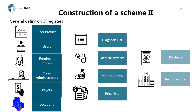What I covered in the last session was user profiles, users, enrollment officers, claims administrators, and locations. Now I'll cover the remaining points: payers — a relatively small thing — this is just a third-party payer, if you have any in an insurance program, which might pay on behalf of a particular group or household. That's just the configuration of that entity so you can indicate it at the time of payments.